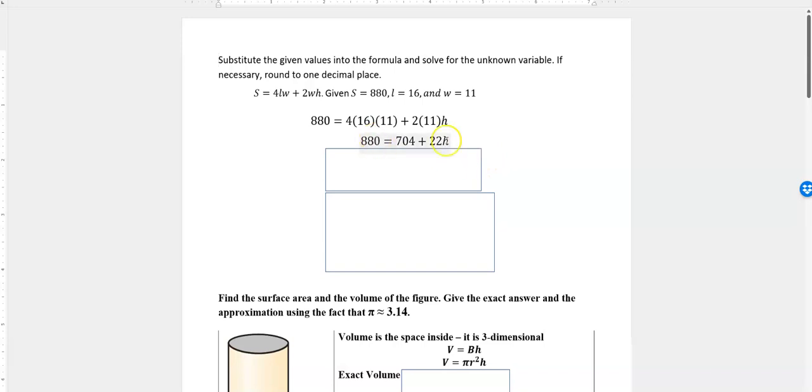The next thing you want to do is solve this equation for H. To do that, subtract 704 from both sides of the equation. That makes the 704 drop out, and on the left side you'll have 176 equals 22H.